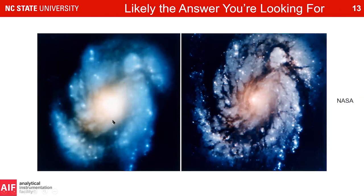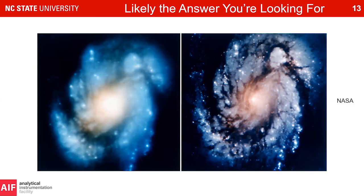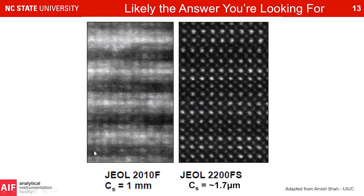A definitive example of spherical aberration correction is the Hubble Space Telescope. When first launched, it had a defect in the main mirror assembly causing high spherical aberration — images of galaxies were worse than ground-based telescopes. A corrector was installed on an orbital mission, and afterward Hubble produced its classic superior images. We can install similar spherical aberration correctors inside modern TEMs, dramatically improving resolution.